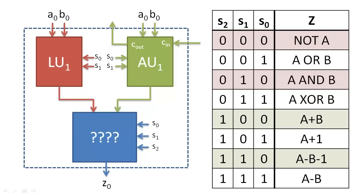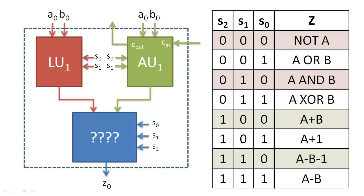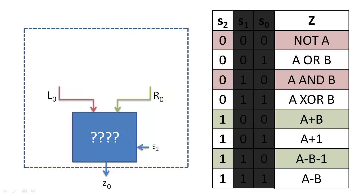As we mentioned earlier, if we want to choose between logic operations and arithmetic operations, we simply need to look at the value of S2. Rather than derive an expression that is based on the many input variables of the ALU, let's use abstraction and call the output of the logic unit L0 and the output of the arithmetic unit R0. We can then effectively ignore the logic unit and the arithmetic unit to simplify the problem.